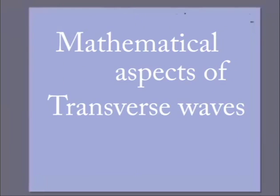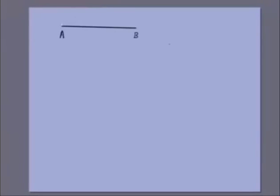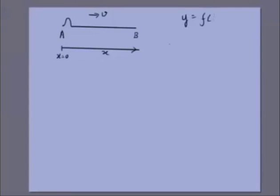Now let's look at the mathematical aspects of transverse waves. Take a stretched rope between points A and B. We move one end in a particular way — up then down — creating a pattern. Setting x = 0 at that end, with wave velocity v toward the right, we could describe the motion of the end as y = f(t), for example y = t(2 − t), which is zero at t = 0 and t = 2 seconds.